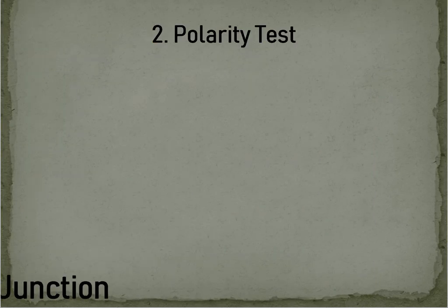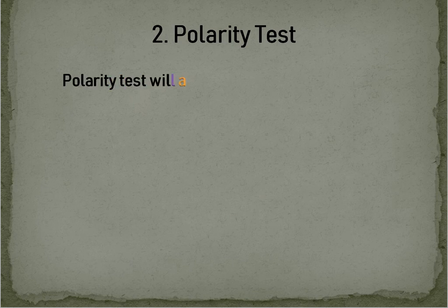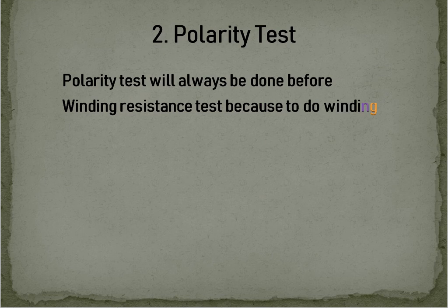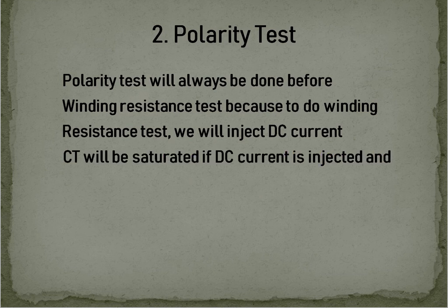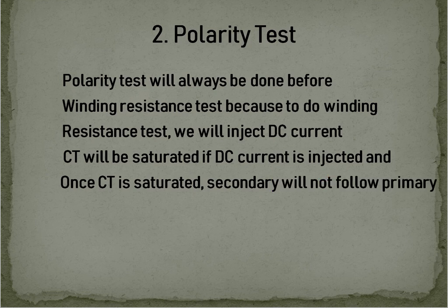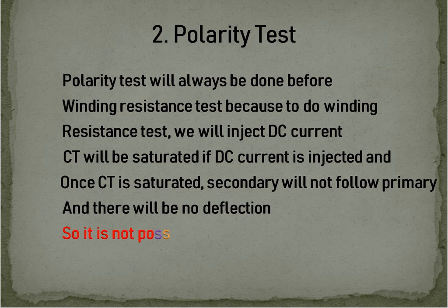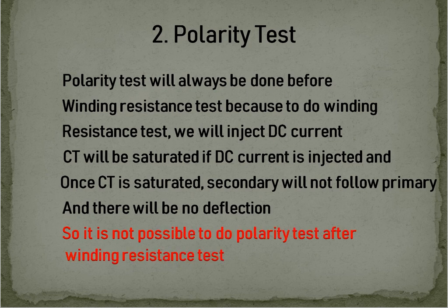Polarity Test: The Polarity Test must always be done before the Winding Resistance Test, because to perform the Winding Resistance Test we inject DC current. If DC current is injected, the CT will be saturated, and once saturated, the secondary will not follow the primary and there will be no deflection. So it is not possible to do the Polarity Test after the Winding Resistance Test.